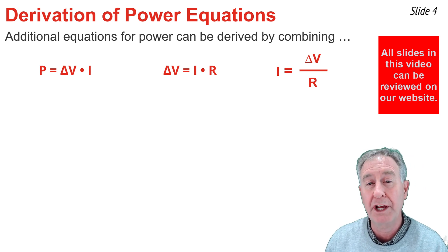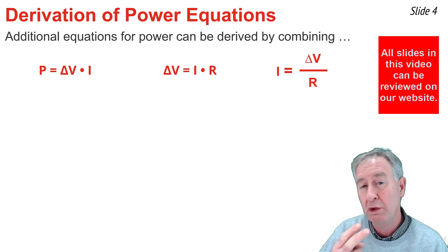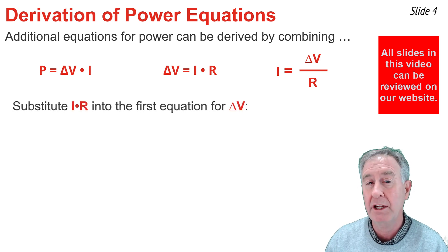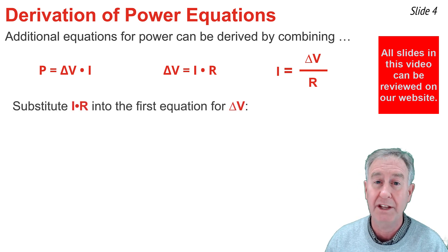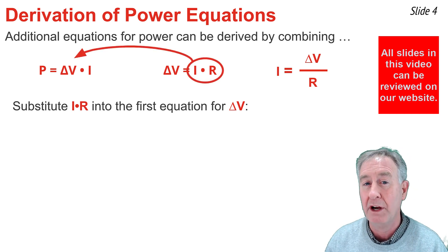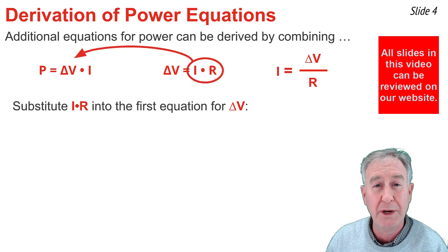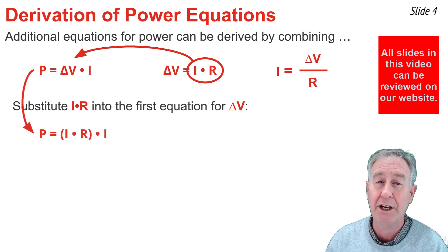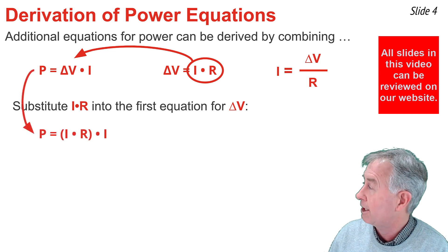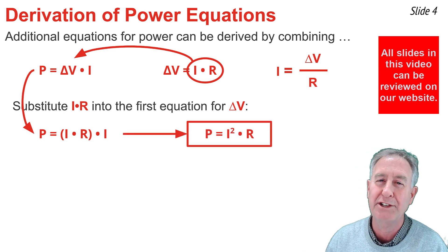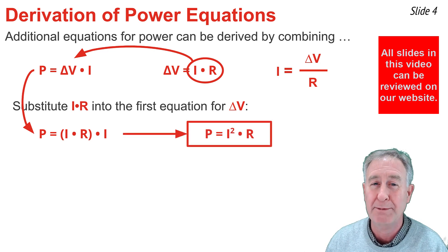I'm going to use these three equations to derive two more electric power equations. In my first derivation, I notice that delta V is equal to IR. So I'm going to take I times R and substitute it into the first equation for delta V. That first equation then becomes P equal I times R multiplied by I, which simplifies to P equal I squared times R.